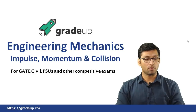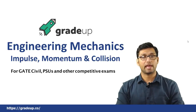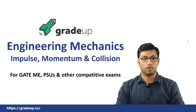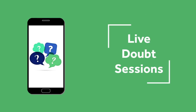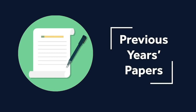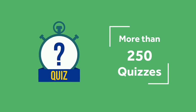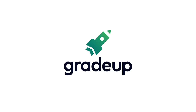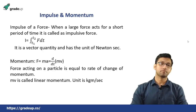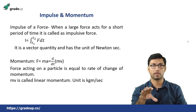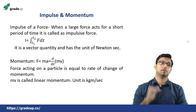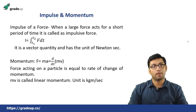So let us understand what is impulse, momentum, and finally what is collision. This is all a part of kinetics — the study of motion considering the cause of motion. So firstly we should understand what is impulse and momentum.